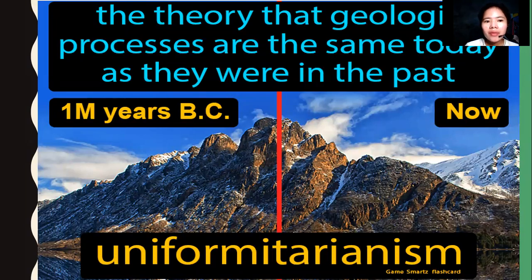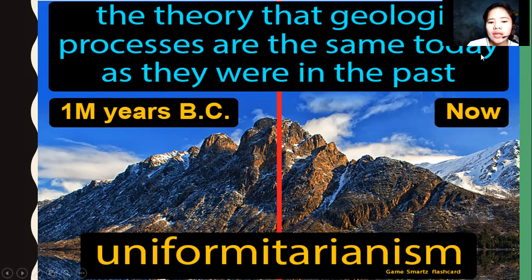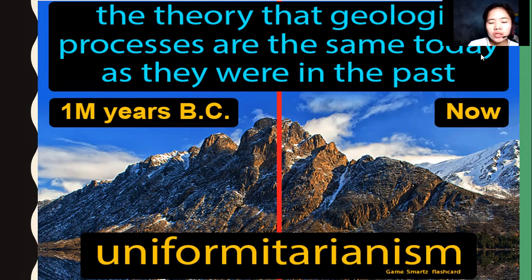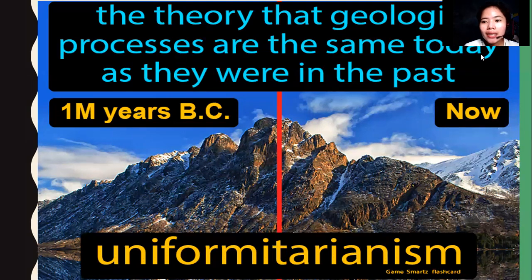Uniformitarianism is the theory that geological processes are the same as they were in the past — what happened before and what happens now are essentially the same. So the components, composition, and characteristics of an organism or rock that existed one million years BC are the same as today.